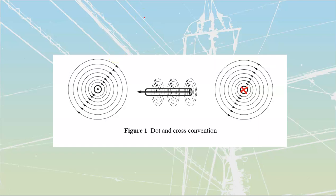The next section talks about a change in current. What happens when the amount of current traveling through here increases? We know that any time we get an increase in current, we are going to get an increase in the size of the surrounding magnetic field. It starts from the very center — every time there's a little bit of increase in current, we're going to generate another flux line, and that flux line is going to push the other ones further out.